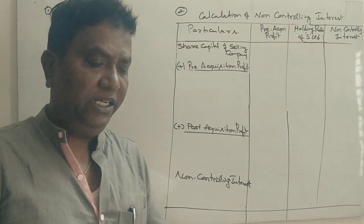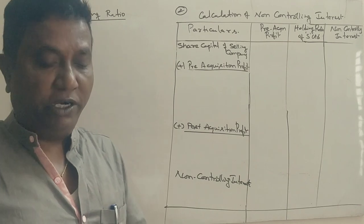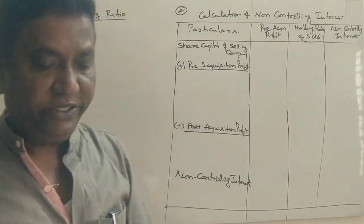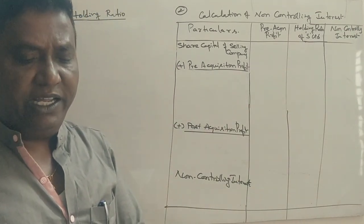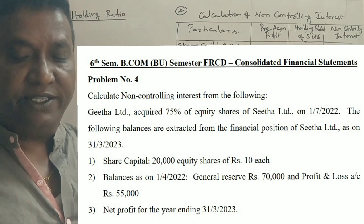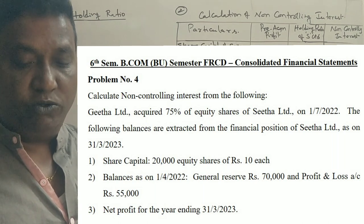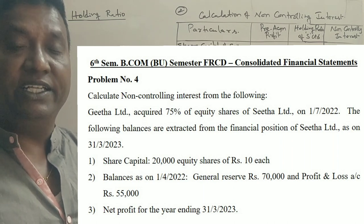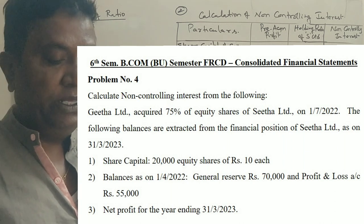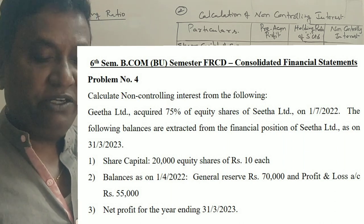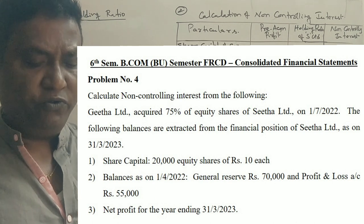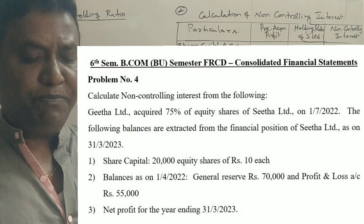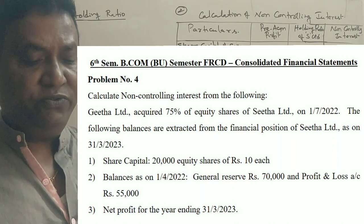Guys, I know one question. Calculate non-controlling interest from the following. Calculation of non-controlling interest: Geeta Ltd acquired 75% equity shares of Sita Ltd on 1st of July 2022. The following balances are extracted from the financial position of Sita Ltd on 31st March 2023: share capital 20,000 equity shares of 10 each, balance on 1/4/22, general reserve 70,000, profit and loss account 50,000, net profit for the year ending 31st March 2023 is 45,000.